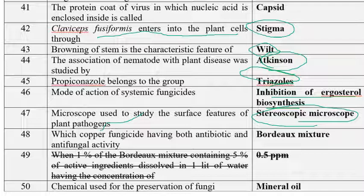The copper fungicide having both antibiotic and antifungal activity is Bordeaux mixture. It was developed by Millardet in the year 1882. The composition of Bordeaux mixture is 1:1:100 — 1 kg copper sulfate, 1 kg hydrated lime, and 100 liters of water. Bordeaux is the university where Millardet worked.